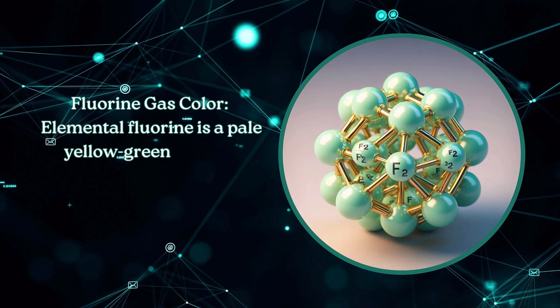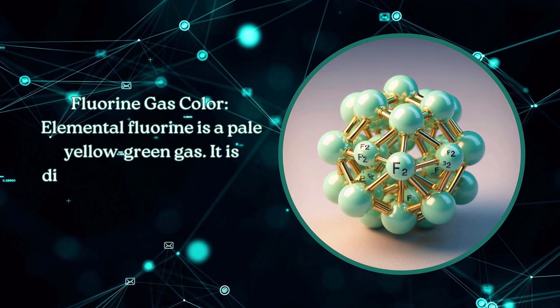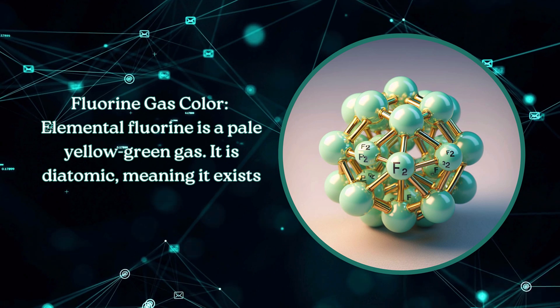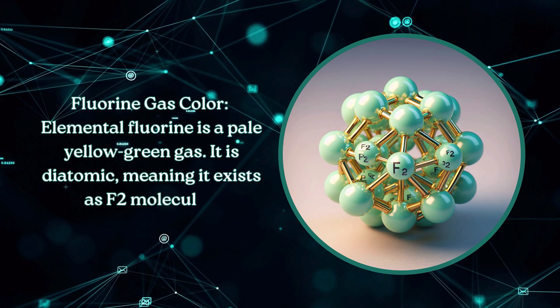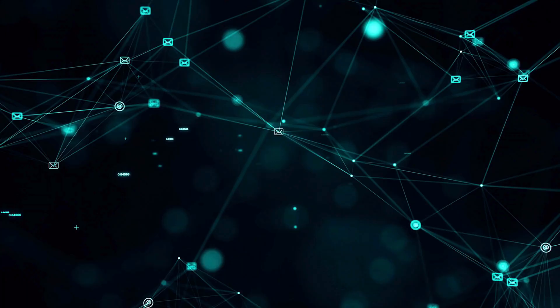Elemental fluorine is a pale yellow-green gas. It is diatomic, meaning it exists as F2 molecules.